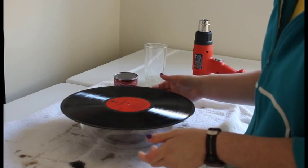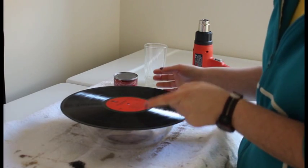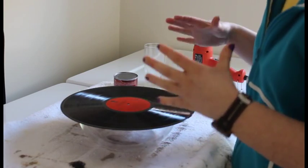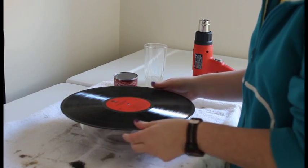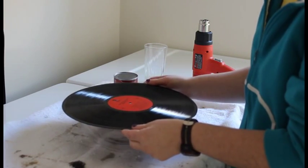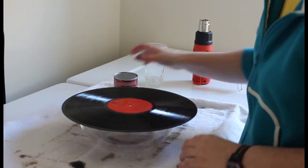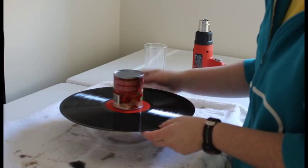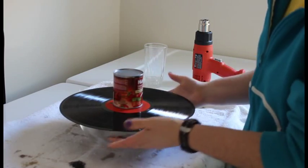Just any old one, just make sure though it's not one that has any value because that would be a total bummer when you go ahead and make this into a bowl and it's worth a lot of money. I just went to Value Village and picked one up for two bucks. And you just need a can with a little bit of weight to it just so we can get it to the shape that we need.